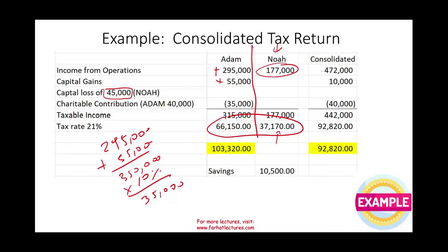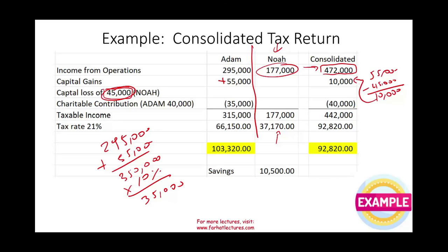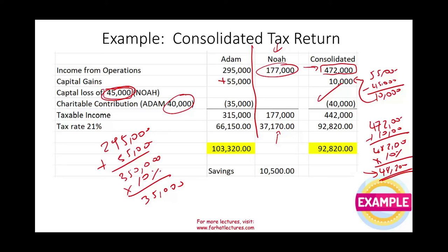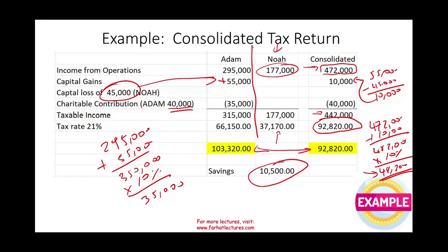When they consolidate, the total operating income is $472,000. Adam's capital gain of $55,000 can be offset by NOAA's capital loss of $45,000, resulting in a net consolidated capital gain of only $10,000. Combined income is $482,000. At 10%, the charitable contribution limit is $48,200 — so Adam's full $40,000 contribution can now be deducted. Taxable income becomes $422,000 times 21%, giving a consolidated tax bill of $92,820. The savings from consolidating is $10,500 — an illustration of the benefit.